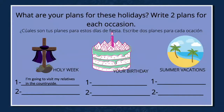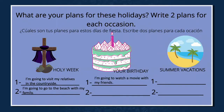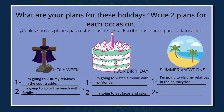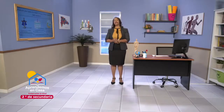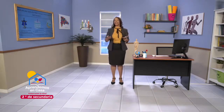Holy week — what are your plans for Holy week? Number one: I'm going to visit my relatives in the countryside. Number two: I'm going to go to the beach with my family. What about for your birthday? I'm going to watch a movie with my friends and I'm going to eat tacos and cake. What about on summer vacations? I'm going to visit my relatives in the countryside again and I'm going to play sports with my friends. Remember, these are just ideas to help you generate your own.